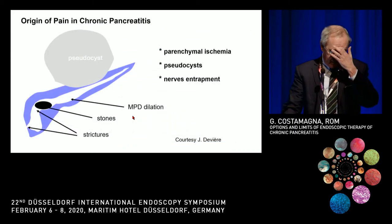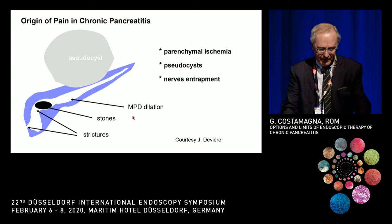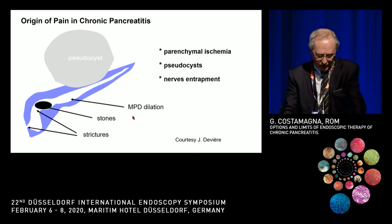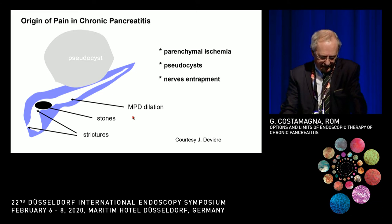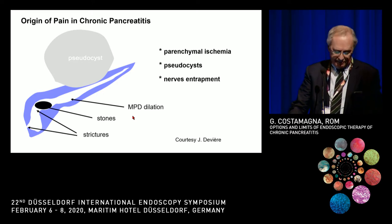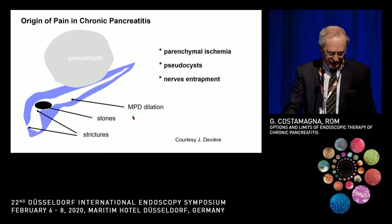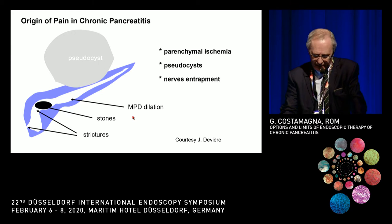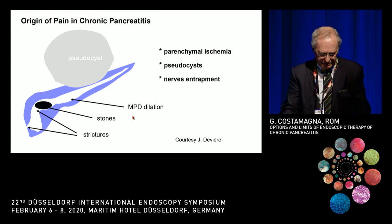The origin of pain in chronic pancreatitis has several origins: parenchymal ischemia, the presence of pseudocyst, nerve entrapment. But very often the obstructive pain is due to the presence of a stricture or a stone, and a dilation of the main pancreatic duct and of the pancreatic tree is present.